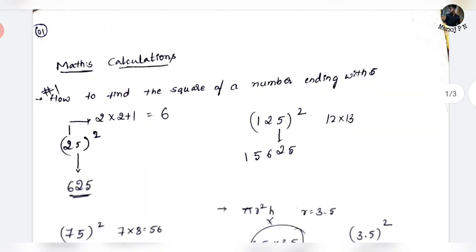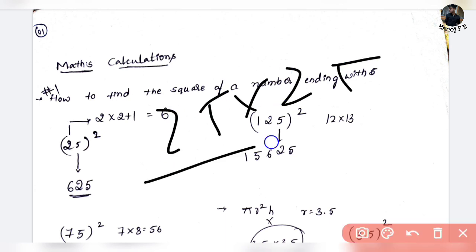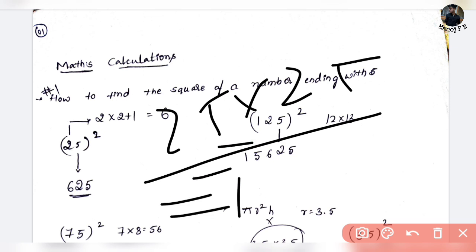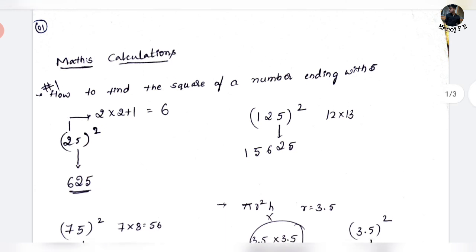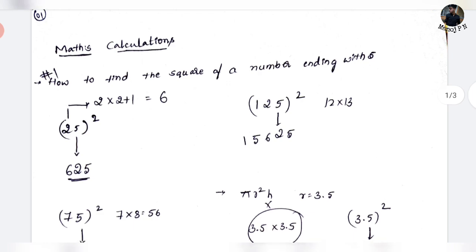First, we have to learn this trick. In mathematics, we can use squares to make a difference. It's easier to find a square using this trick. We can't follow the traditional way. Let's say if you want to find the square of 25. First, we need to know about numbers ending with 5. We need to know the square of those numbers.